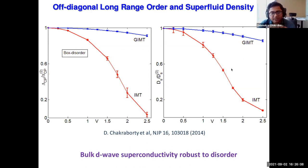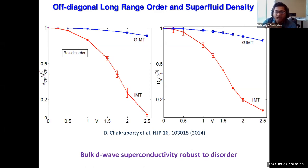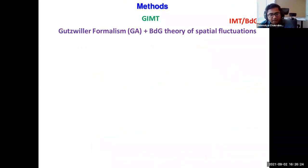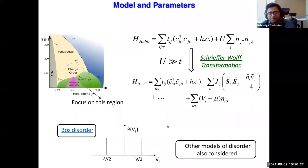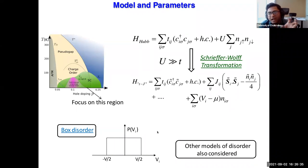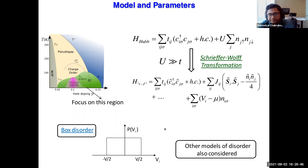Other disorder models have various parameters to play with, making the physical picture less clear. Box disorder allows us to extract a physical picture from a single parameter and then check whether results hold for other disorder models.